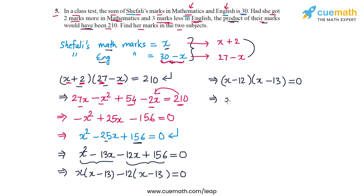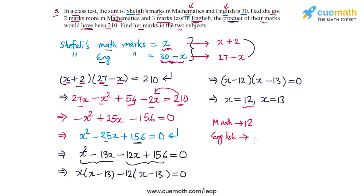This means x is either 12 or 13, giving two roots, both of which appear valid. Taking the first root, x equals 12: Shefali's math marks are 12 and her English marks are 30 minus 12, which is 18. Verifying: two more in math gives 14, three less in English gives 15, and 14 times 15 is 210. The first root checks out.